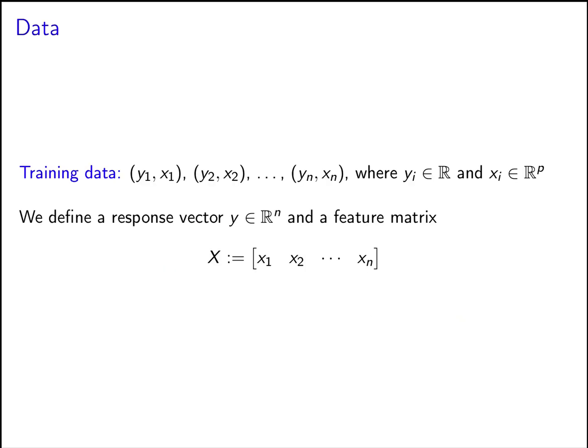Here is our notation for the data we use to make these estimates. We're going to have n examples, and each of the n examples is composed by an observation of the response — which we call y1, y2, etc. — and p observations of p features, stored in a vector. Using all of these features we're going to define a feature matrix X where each of the columns has p entries.